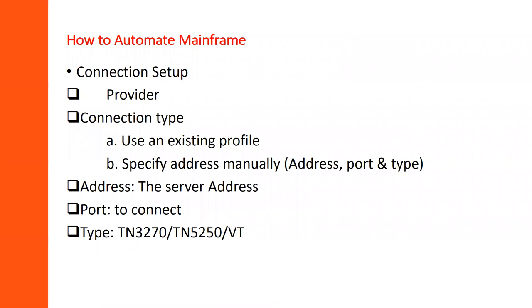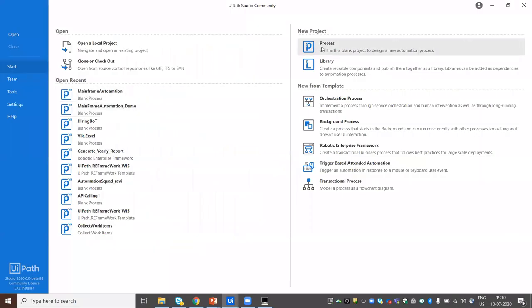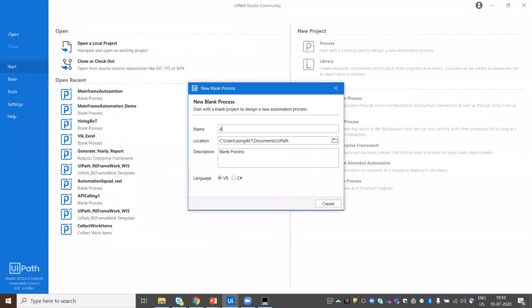Let's move to the next part — this is really important and is going to be the soul of your project. This is where you create a connection between Studio and the mainframe system. Let's go to the studio and create a new process. I'll give it the name 'automating mainframe'.